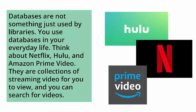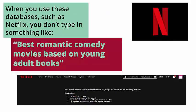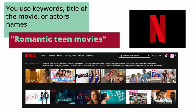Databases are not something that are just used by libraries — you use databases in your everyday life. Think about Netflix, Hulu, and Amazon Prime Video. They are collections of streaming video for you to view, and you can search for videos. When you use these databases such as Netflix, you don't type in something like 'best romantic comedy movies based on young adult books.' You use keywords, title of the movie, or actors' names. In this example, we can try 'romantic teen movies' to see the best results for something you might want to watch.